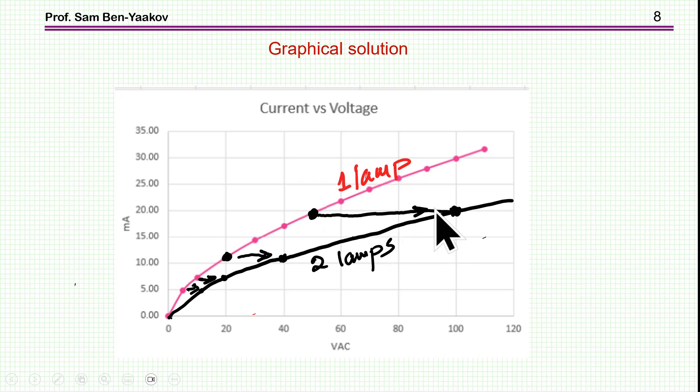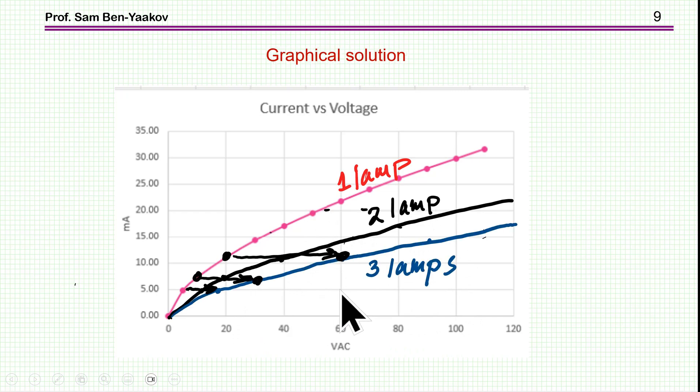So each point that sort of moved it twice, like this is 50, and I moved it to 100. And then I can do the same thing for three lamps. So for example, here, we have 20. So I moved it to 60. So this blue gray line is for three lamps, two lamps, and this is one lamp.